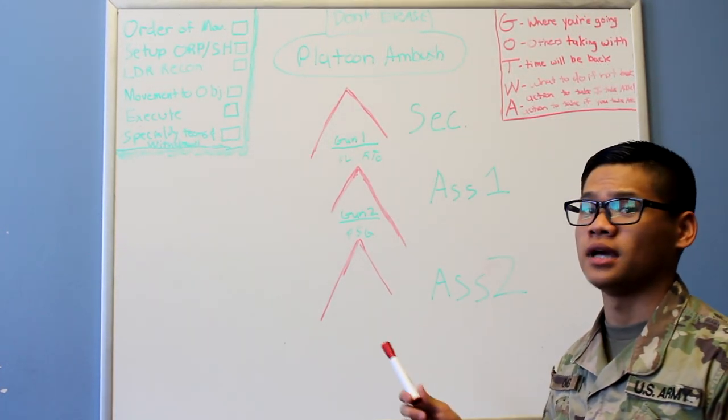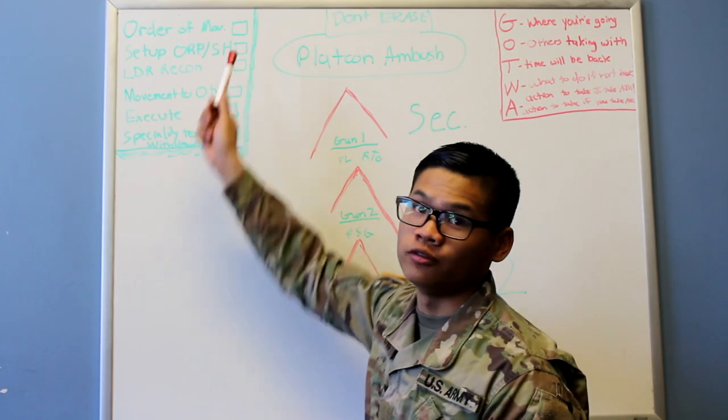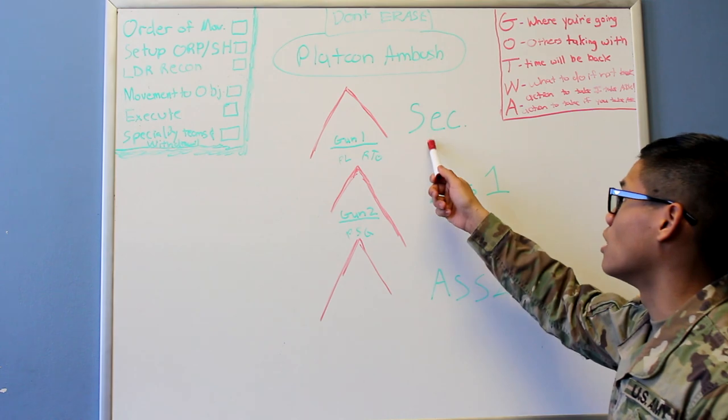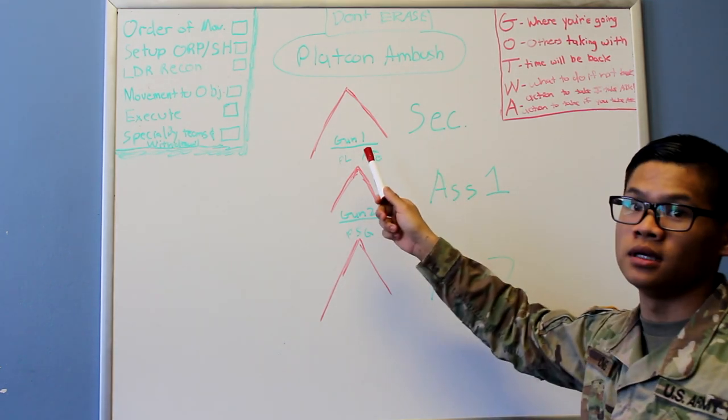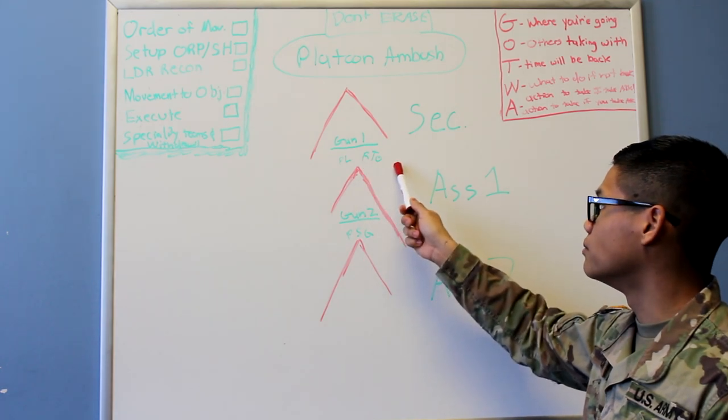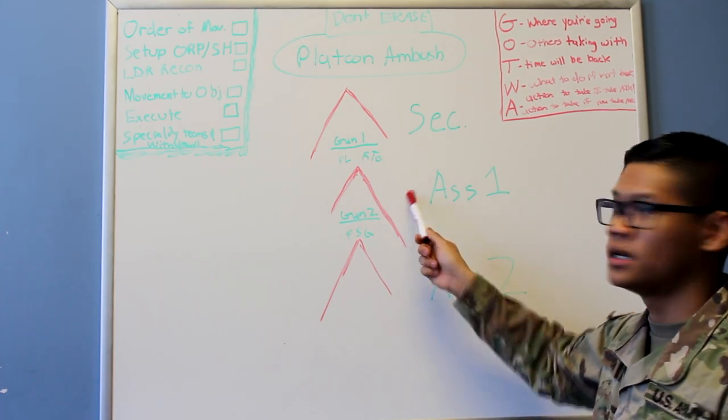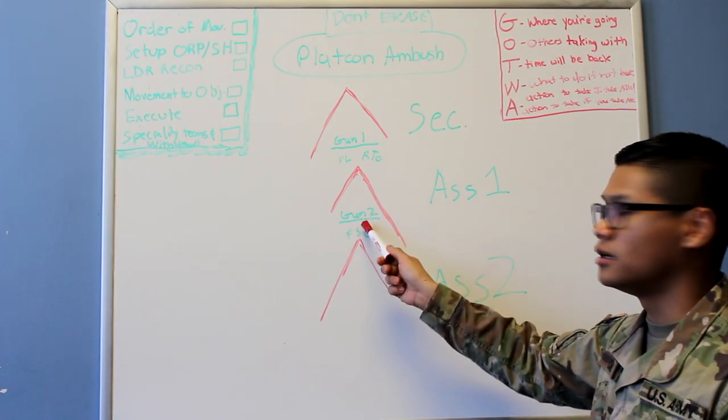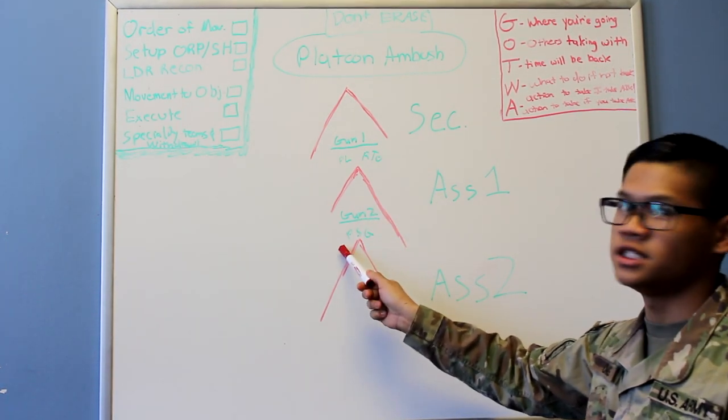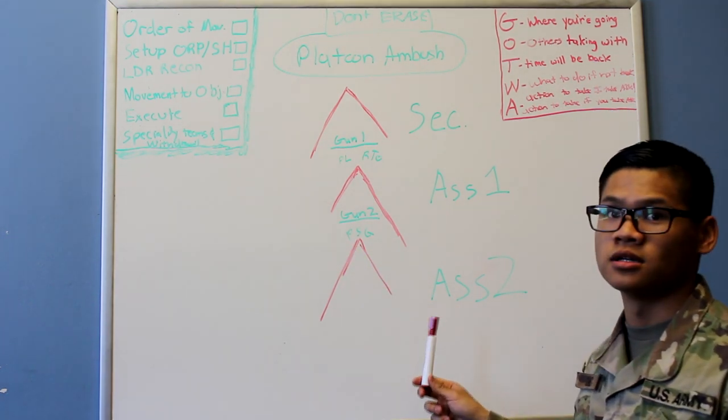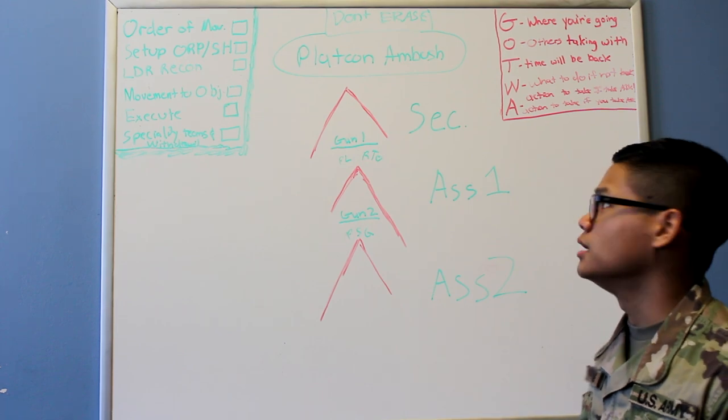The first step to Platoon Ambush will be order of movement. In the order of movement, the leading element will be the security squad. Under security squad will be Gun 1 followed by the PL and the RTO. The middle element will consist of the Assault 1 element followed by Gun 2 and the PSG. And the rear element will be Assault 2 leading to the objective.